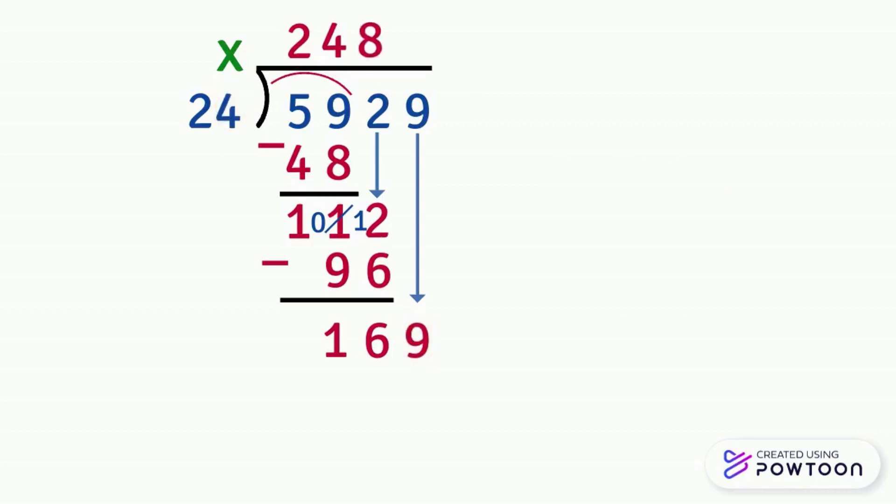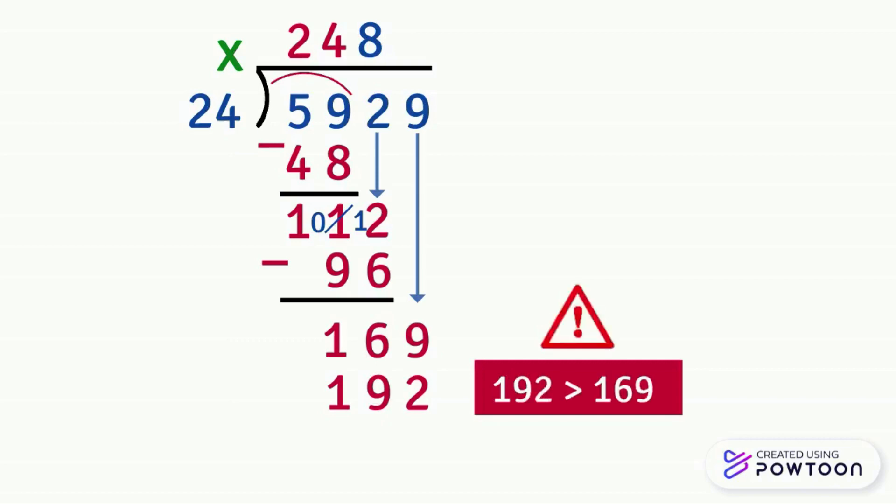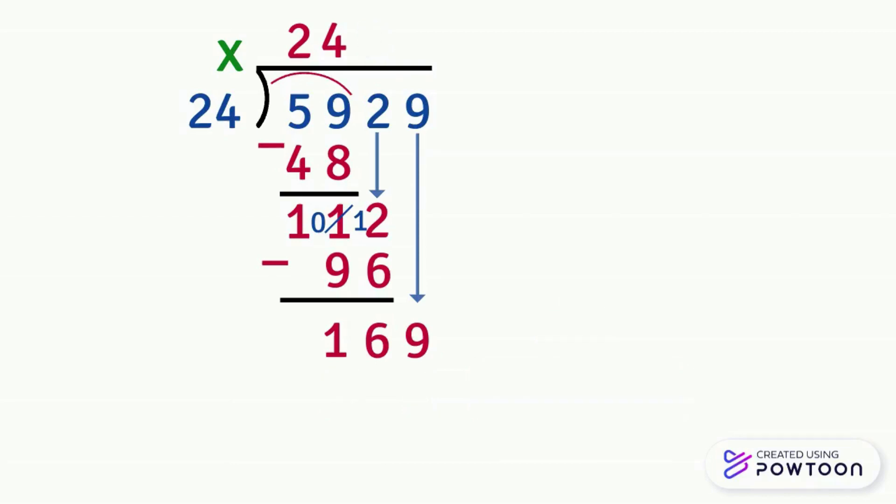Then we write 8 in the quotient and multiply 24 by 8. 8 times 4 equals 32. We will write 2 under the 9 and we will carry 3. 8 times 2 equals 16. We add 3 to 16 it will be 19. So 24 times 8 equals 192. But be cautious. 192 is greater than 169. So here we cannot take 8 to multiply it by 24. So we will erase the number 8 and the number 192. And we must take the number which comes just before 8 which is 7.